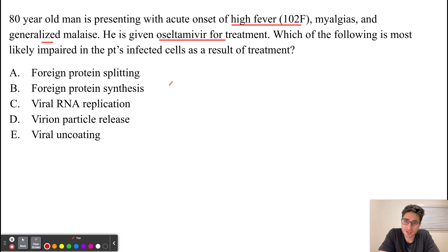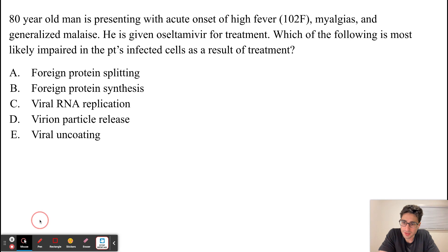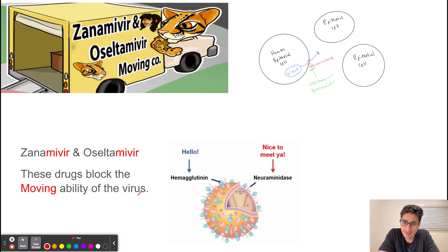This patient is experiencing symptoms of an influenza infection, and the influenza virus has two really important surface proteins that we need to know. One of them is hemagglutinin, which is going to allow the virus to enter our cells.